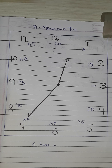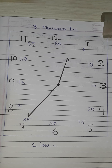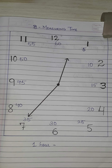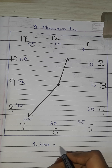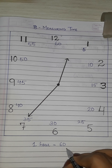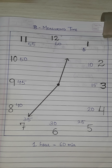Good afternoon students. Today we are going to learn our new chapter that is measuring time in maths. First we will revise what we have learned in previous standard. Here is a picture of a clock and you have to tell me how many minutes are there in one hour. Yes, we have 60 minutes in one hour. So, one hour is equal to 60 minutes.